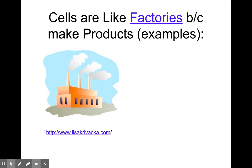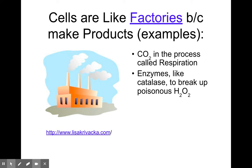Cells are like factories, really and truly. Cells will produce CO2 when they do cellular respiration, and all cells do cellular respiration. Cells will produce enzymes to help run the cell. So if you have H2O2 — hydrogen peroxide — your body makes it as a product. Your body has to make catalase, which is an enzyme, to break that down right away. Otherwise it poisons your body.